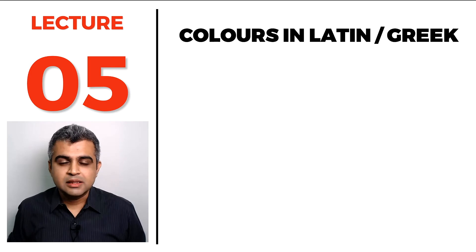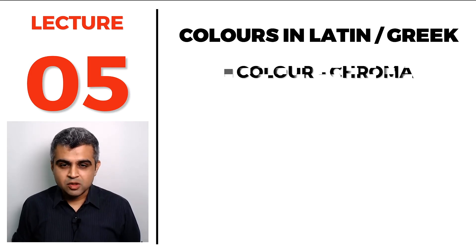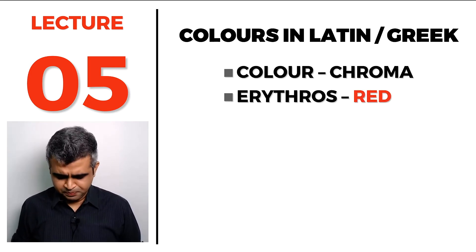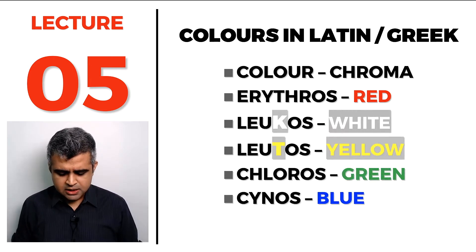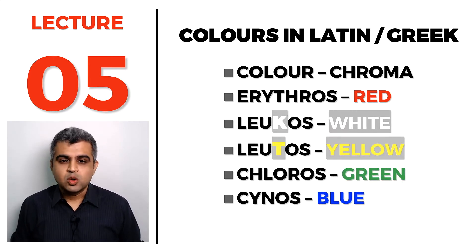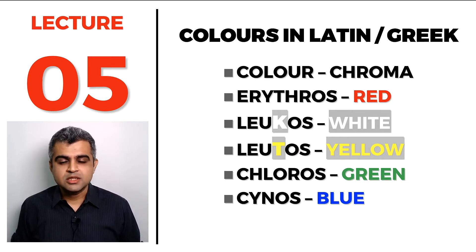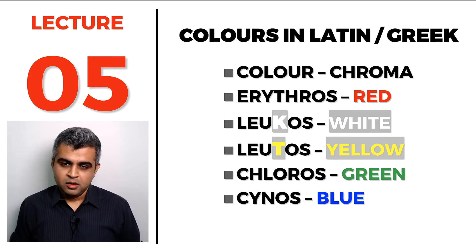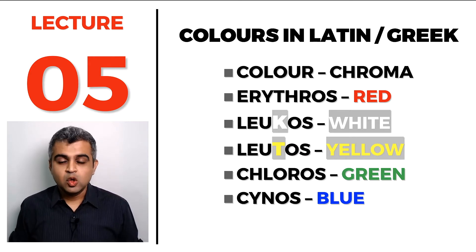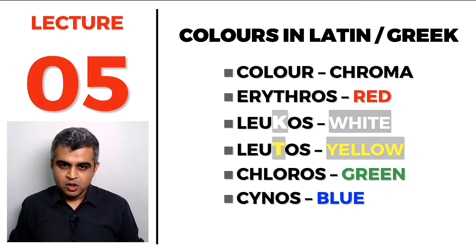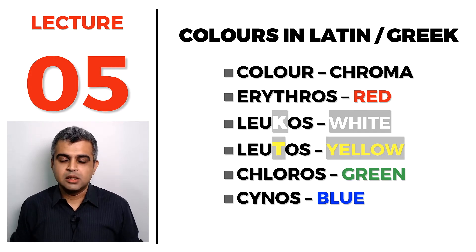We also discussed colors in Greek and Latin: erythros is red, leucos is white, leutos is yellow, chloros is green, and sinus is blue — with chroma meaning color. So erythrocytes means red cells, and chlorophyll means green leaf or green things inside a leaf. These were the Greek and Latin words discussed in the last lecture.